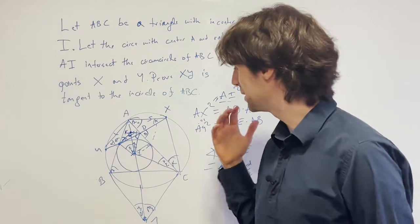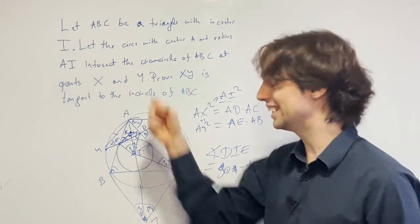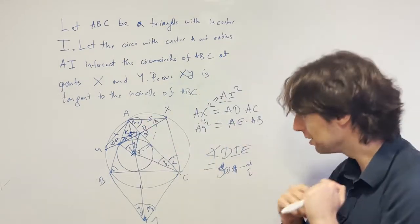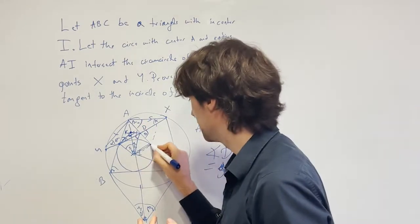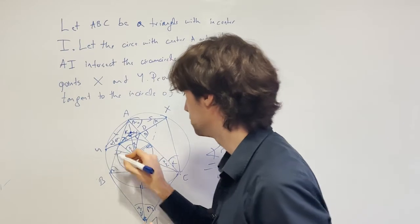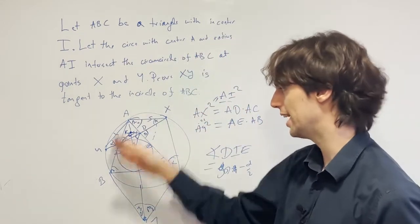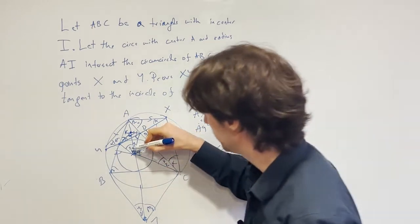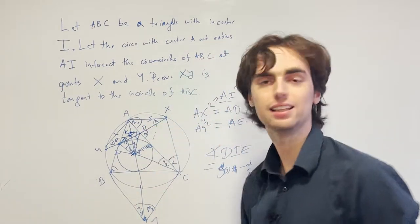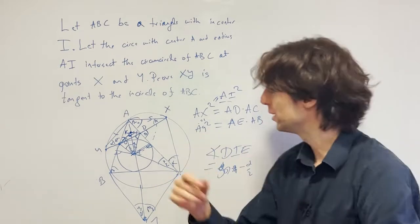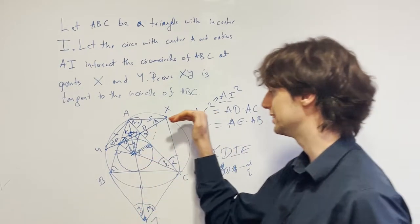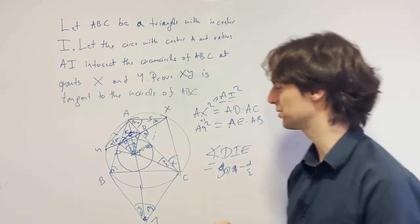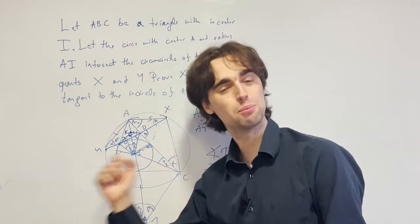Now, how do we prove that the incircle of ABC is in fact the excircle? Well, it is because it touches these two lines AE and AD. And so we know that it touches the line ED as well. Ergo, ED is tangent to the incircle. Ergo, XY is tangent to the incircle of ABC, which completes the problem.